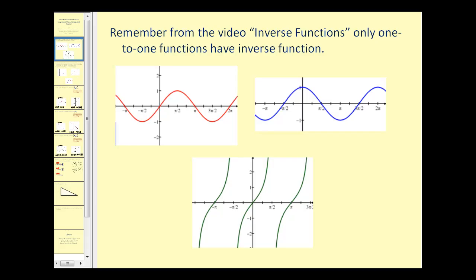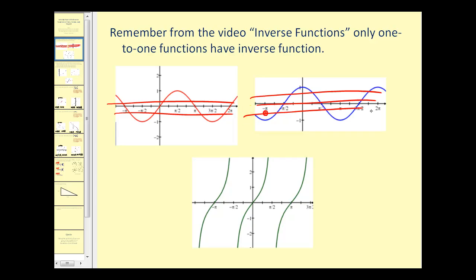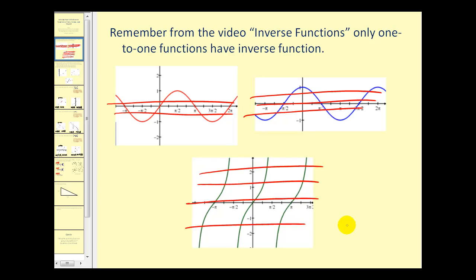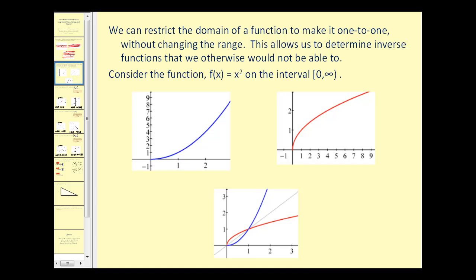Remember from the video on inverse functions, only one-to-one functions have inverse functions. Sine, cosine, and tangent in their current form are not one-to-one functions. Each of these fails the horizontal line test because a horizontal line intersects the graph in more than one point. So we cannot find the inverse functions of these in their current form. What we can do is restrict the domain of a function to make it one-to-one without changing the range.